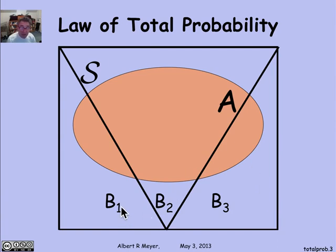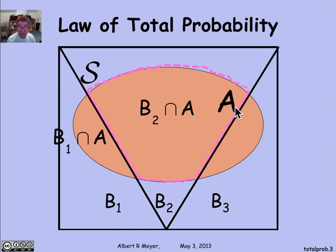Now, of course, these three sets that cut up the whole space willy-nilly cut up the set A into three pieces. The first piece is the points in A that are in B1. The second piece is the points in A that are in B2. And the third is the points in A that are in B3.